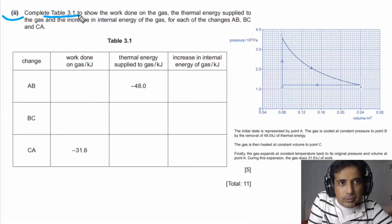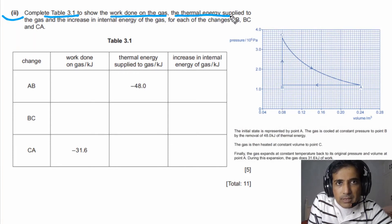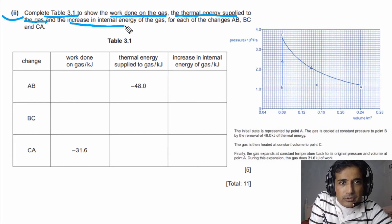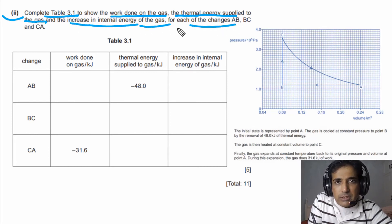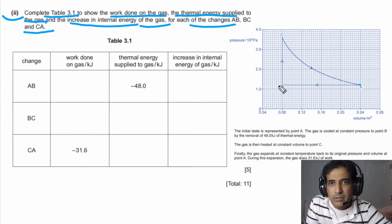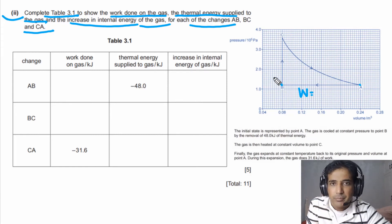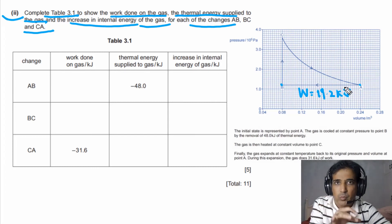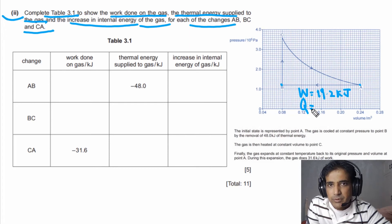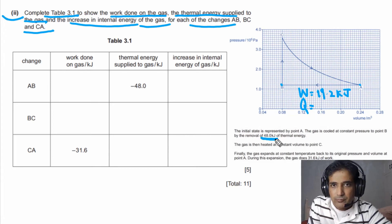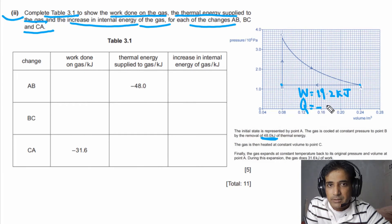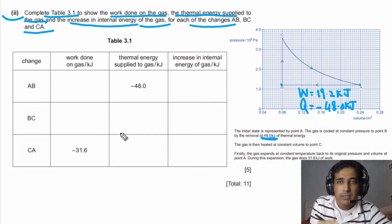For part B2, we need to complete Table 3.1 showing work done on the gas, thermal energy supplied to the gas, and increase in internal energy for each change: AB, BC, and CA. For A to B: work done on gas = +19.2 kJ (compression, calculated in part 1). Thermal energy supplied = −48.0 kJ (energy is released).